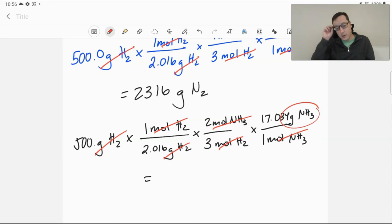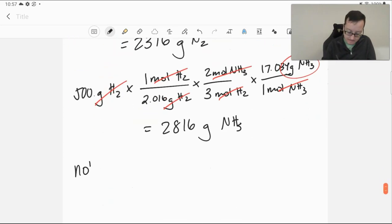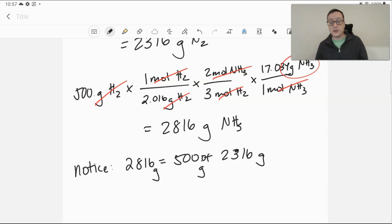Let's go ahead and do it. 500 divided by 2.016 divided by 3 times 2 times 17.034. And we get, surprisingly, 2,816 grams of ammonia. How is that not surprising? Think about it. Notice, 2816 is the same as the sum of our original masses. Right? So, if we have that much hydrogen, that much nitrogen we're putting together, we should expect them to make up our product.